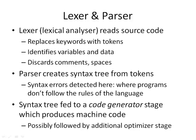The compilation is done in two key stages, though a compiler might take more than one pass. The lexer, or lexical analyzer, reads the source code, takes any programming language keywords and replaces those with tokens, identifies any variables and data, and throws away things like comments and spaces. This is passed as input to a parser, which creates a syntax tree from the tokens. This is where syntax errors will be detected, checking that the program follows the rules of the language correctly. The output is then fed to a code generator stage, which produces the machine code, optionally followed by an optimization stage.